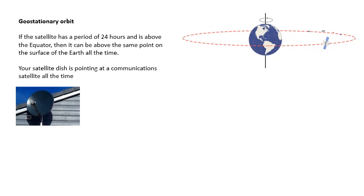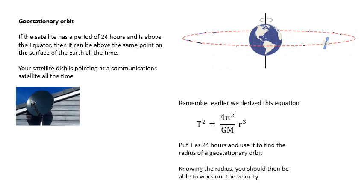This region of space is getting quite crowded with satellites at the geostationary radius above the equator. Above heavily populated parts of the world the signals from these satellites can start interfering with each other. Using Kepler's third law — T² = (4π²/GM) × r³ — if you put T = 24 hours you can find the radius of a geostationary orbit, and from the radius you can work out the velocity.